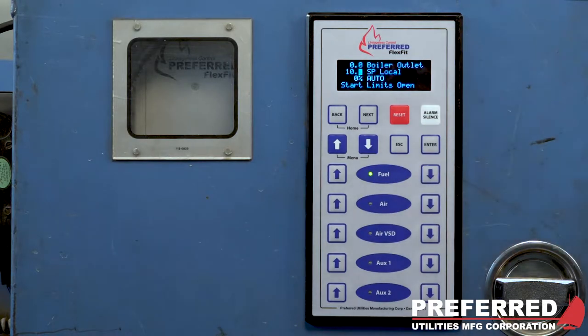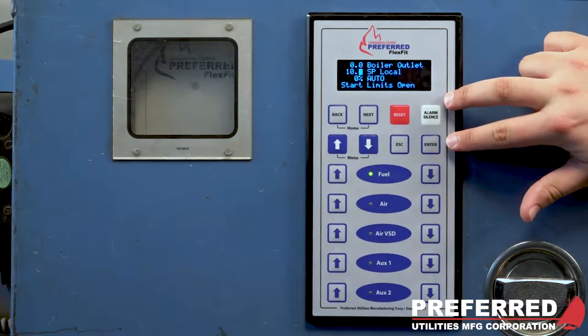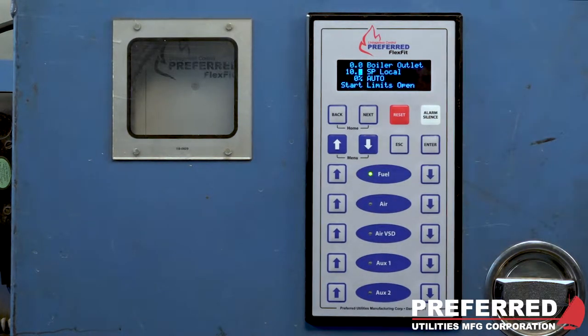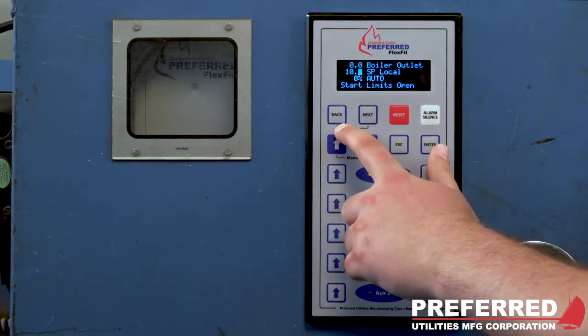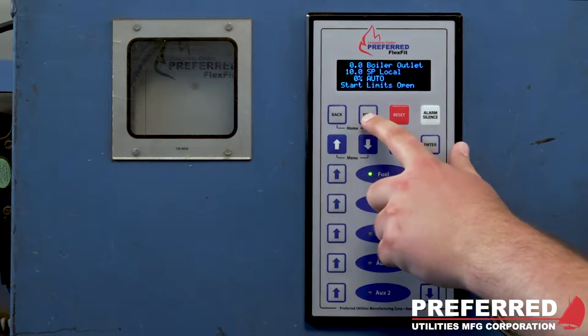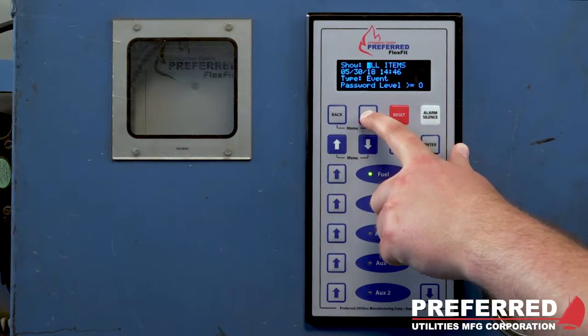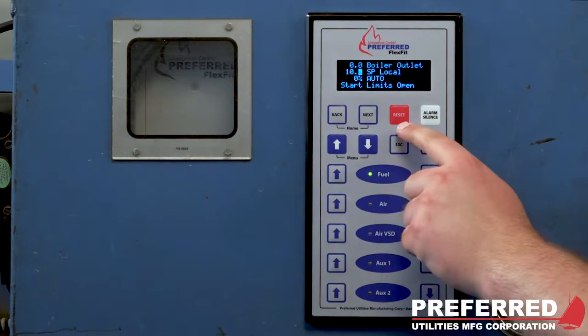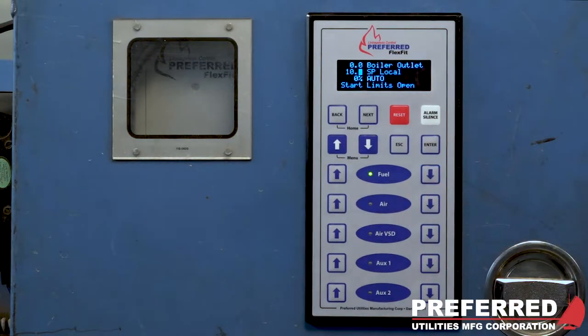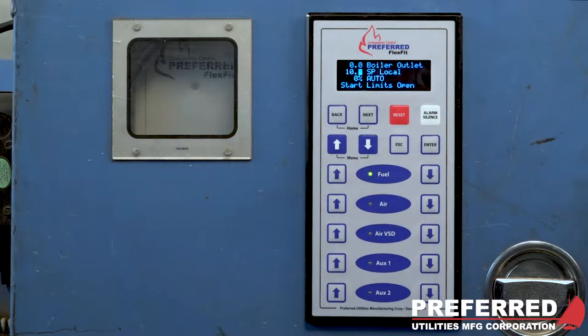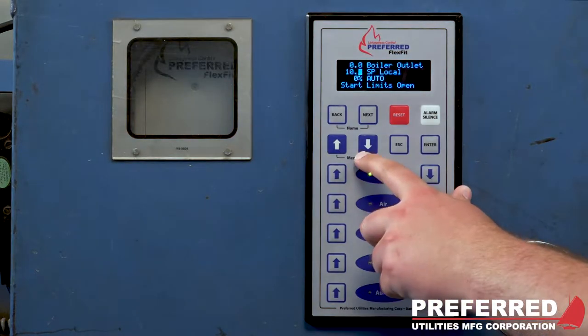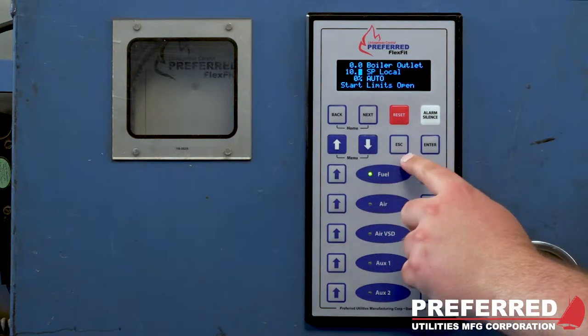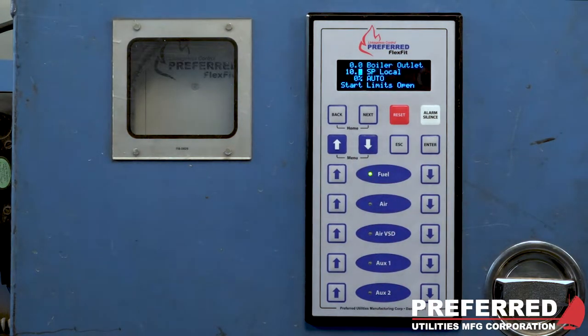If you look at the keypad you will see eight keys on top and then ten below that. The eight on top are the back and next buttons and these will cycle through your different home screens. Next to that is reset and alarm silence. If you get an alarm you press the alarm silence to silence the alarm, and the reset button will reset any lockouts that have occurred. The up and down arrows and the escape and enter button will be seen when we explore the menus.